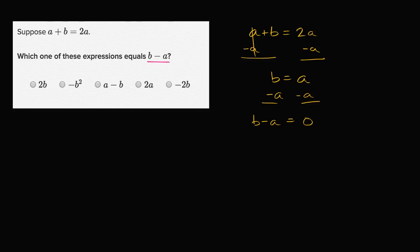So let's see if we can figure out some other things. b minus a is equal to zero, but that is not one of the choices. Is there any other way to manipulate this? I could just go straight ahead and subtract two a from both sides and I would get b minus a is equal to zero.